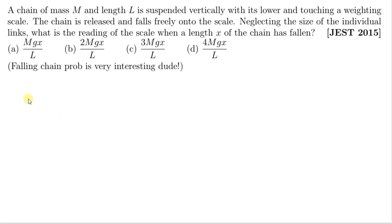So what is the problem statement? A chain of mass M and length L is suspended vertically with its lower end touching a weighing scale. The chain is released and falls freely onto the scale. Neglecting the size of individual links, what is the reading of the scale when a length x of the chain has fallen?